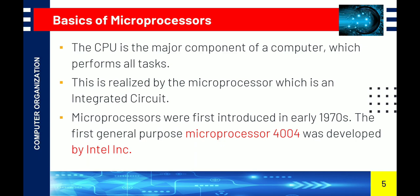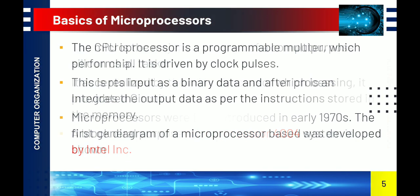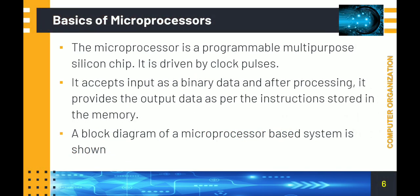The first microprocessor was the Intel 4004, made by Intel Inc. It had 4-bit input and 4-bit output, meaning it performed 4-bit data transformation.